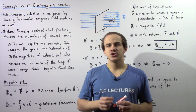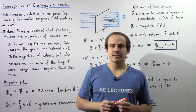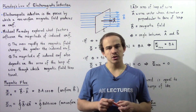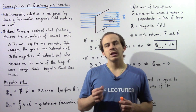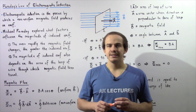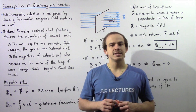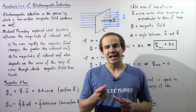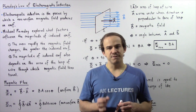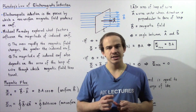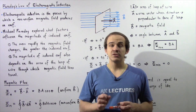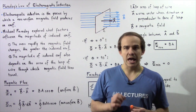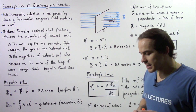In the previous lecture, we discussed the concept known as electromagnetic induction. Electromagnetic induction is essentially the process by which a changing or non-uniform magnetic field induces an EMF — an electric potential difference — within a conducting wire.